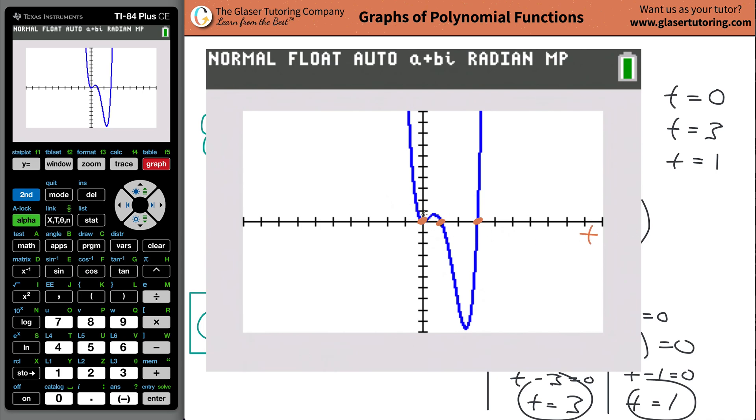So what's the t value of this coordinate? Zero. Great. What's the t value of this coordinate? One. Positive one. Great. What's the t value of the last one? Three. Great. Look at that. There it is. There it is. You don't even need the graph.